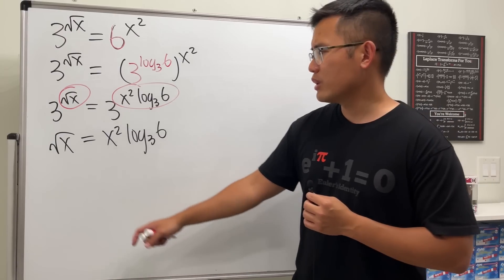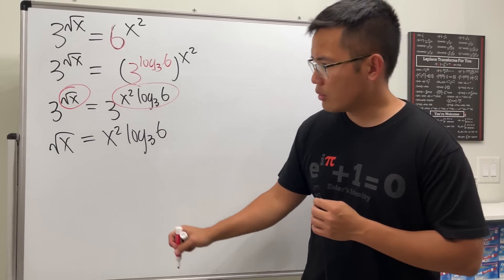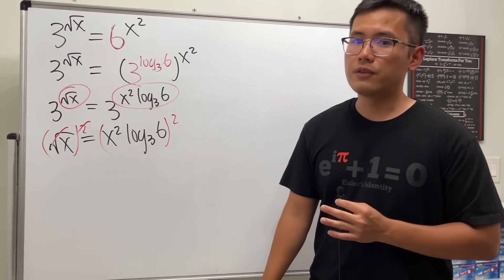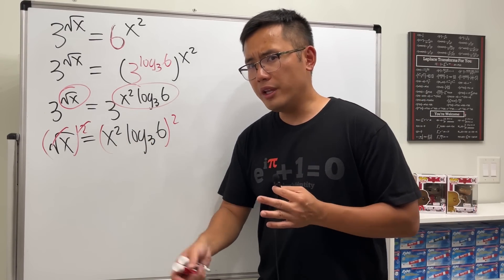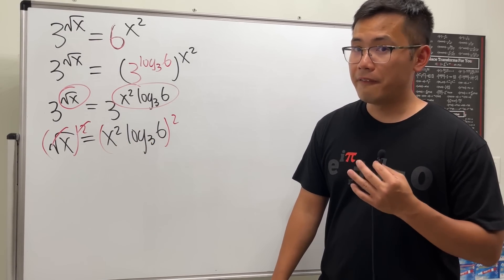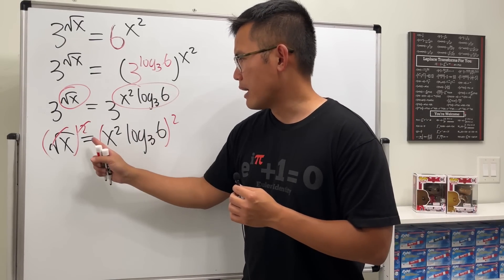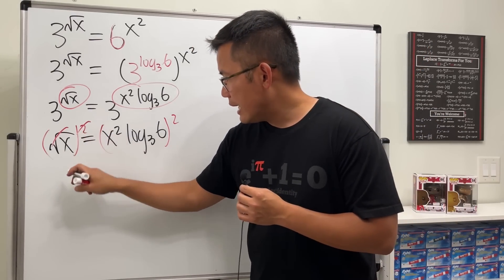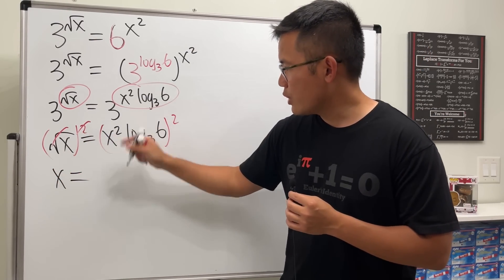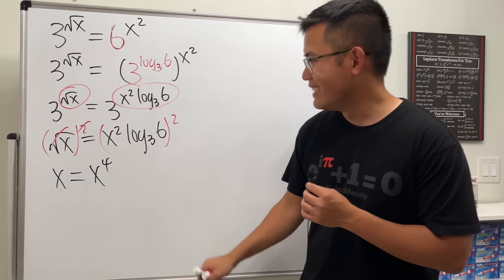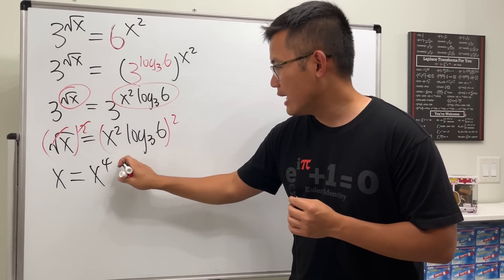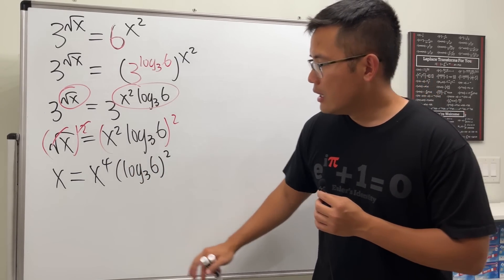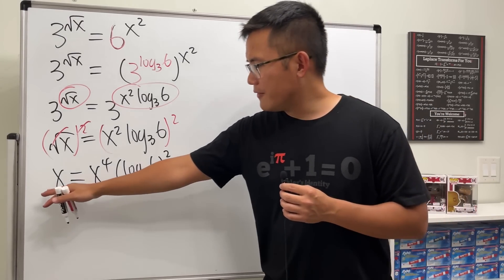Now, how do we solve this? We don't want a square root of x, so let's square both sides so the square root cancels. We have to be careful — whenever we square both sides we may end up with extraneous (fake) answers, so keep that in mind. On the left we get x, and on the right we get x to the fourth power times (log base 3 of 6) squared.